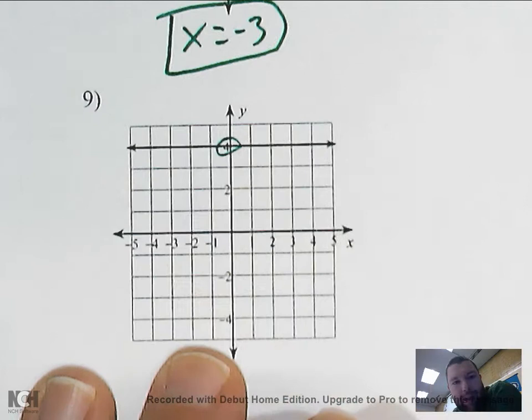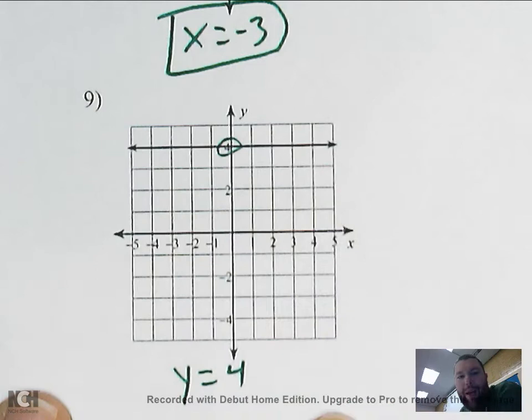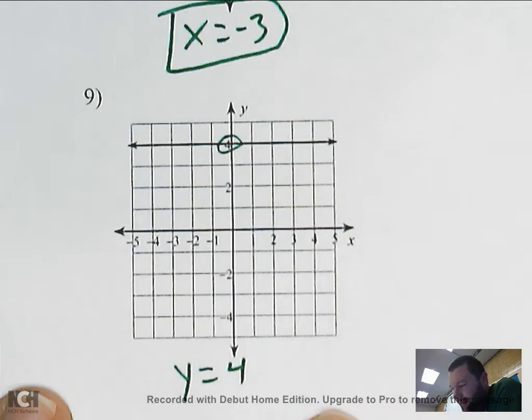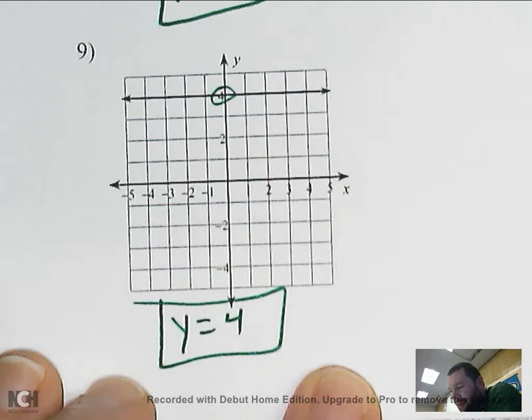No matter what the x value is, y is always going to be four. Because if y is always four, you end up with a horizontal line — each of these points on this line have a y value of four. That would be your equation: y equals four.